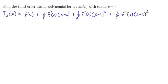Now remember that the center for the series is c equals 0, so all of the c's in this equation can be replaced by 0's. Now let's start working on those coefficients: f, f prime, f double prime, and f triple prime at 0.